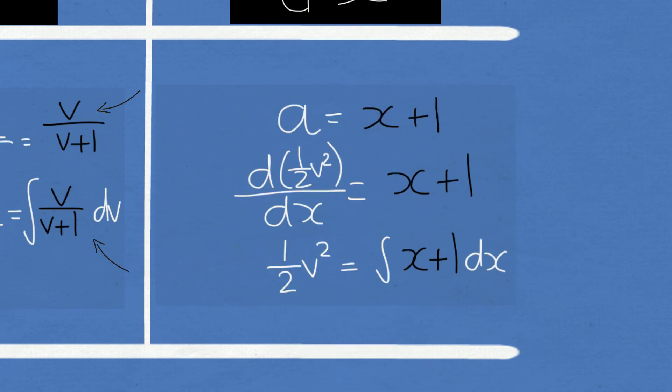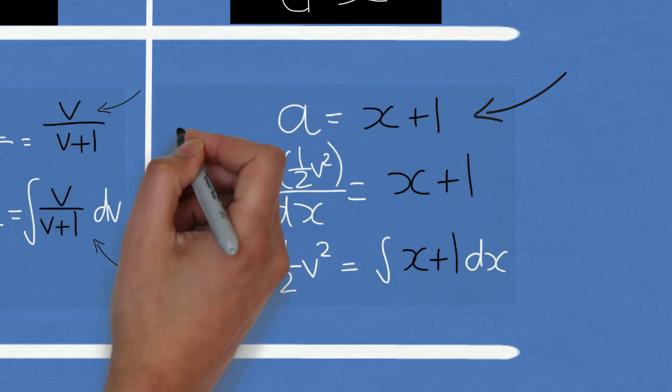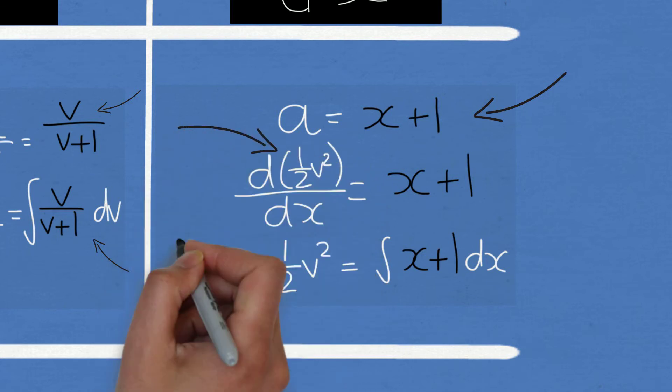An example would be you're given acceleration equals x plus 1 and you're asked to find velocity in terms of displacement. You have to write acceleration in that form first and then anti-diff both sides in terms of x. You can then proceed to solve for velocity after doing some algebra.